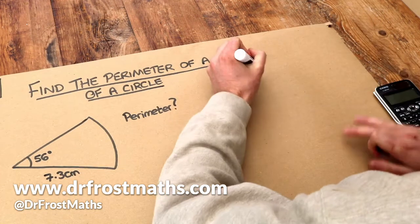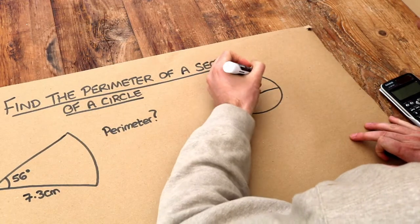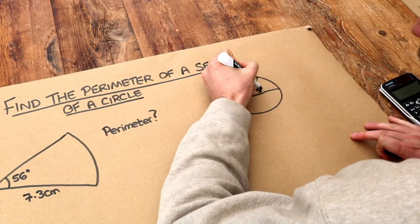Now what do I mean by sector? If I have a full circle, then the sector is like a pizza slice, just some portion of it. So that is a sector.